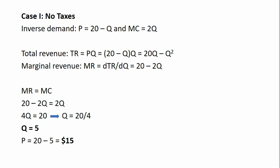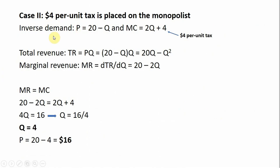This is the monopolist without taxes. In case two, the monopolist has the same inverse demand of P equals 20 minus Q. The marginal cost is now adjusted for a $4 per unit tax placed on the monopolist — we simply add $4 to the marginal cost equation. Total revenue and marginal revenue are unchanged. Setting marginal revenue equal to the new marginal cost and solving, Q equals 4, and plugging that into the demand equation gives a price of $16.